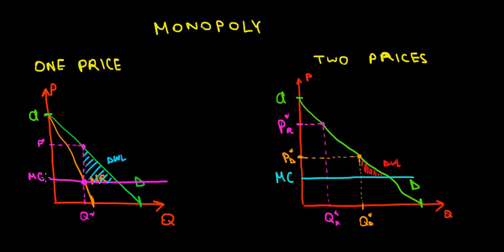The marginal revenue equals the marginal cost, which is the purple line. This gives us the quantity we sell on the market, but the price we actually charge the consumer has to belong to their willingness to pay — because we are charging the willingness to pay — so that corresponds to the demand line, which gives us this price over here.